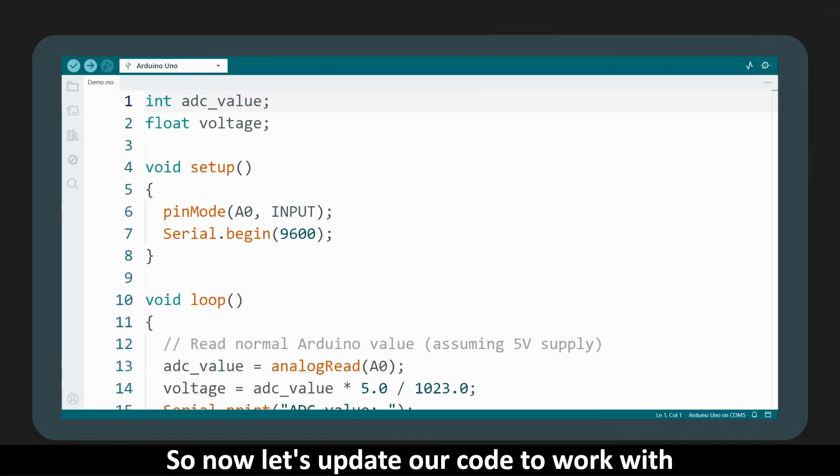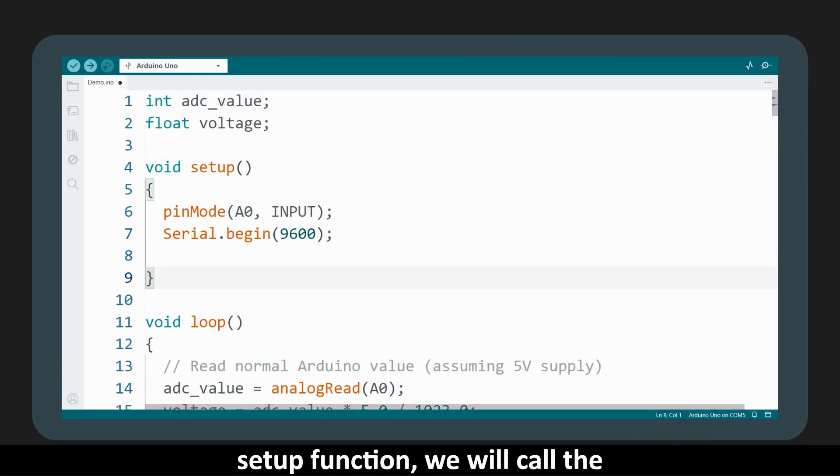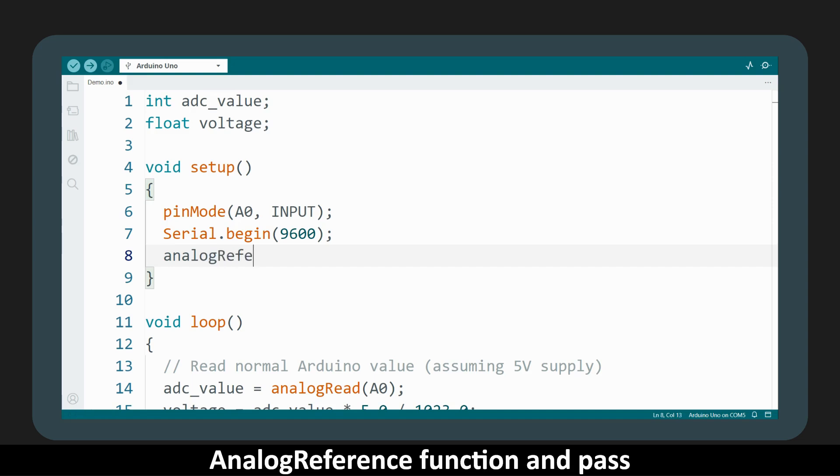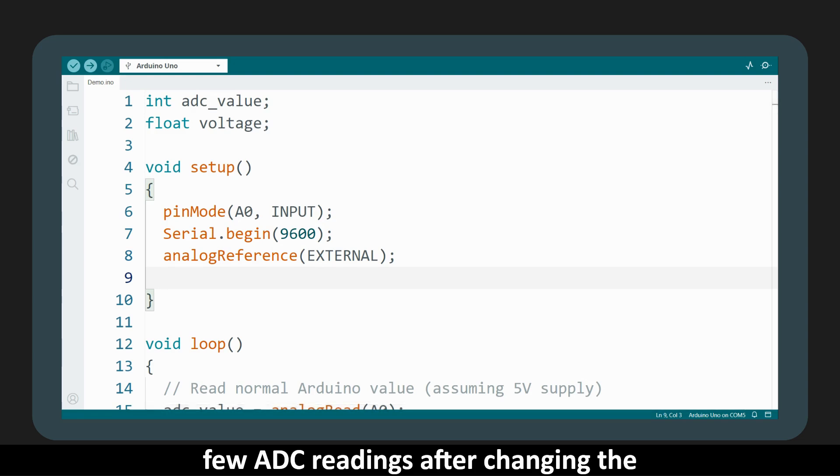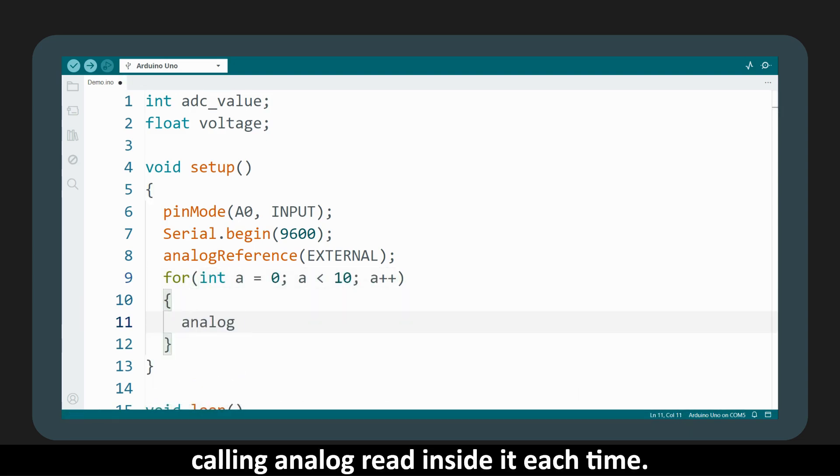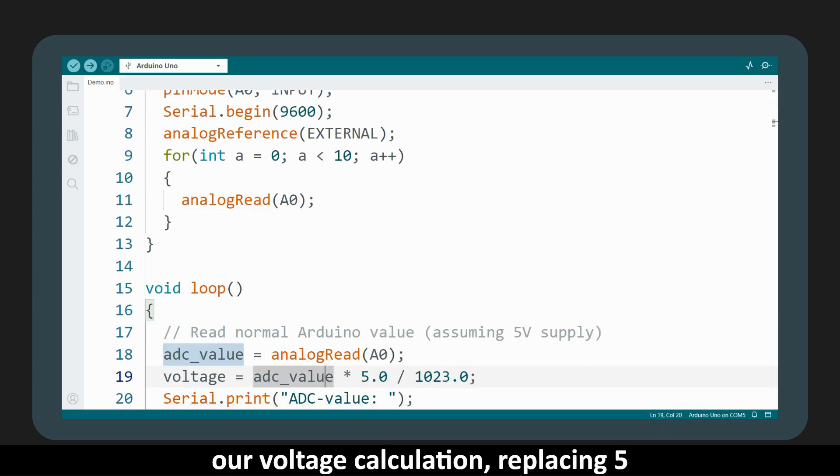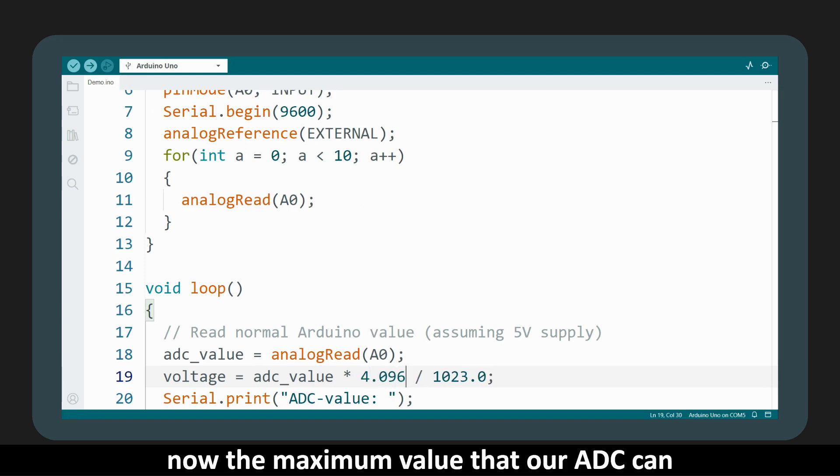So now let's update our code to work with an external voltage reference. In the setup function, we will call the analogReference function and pass external as the parameter, since we are using an external reference source. It is also good practice to discard the first few ADC readings after changing the reference, because they tend to be inaccurate. To handle this, we'll run a short for loop about 10 times, calling analogRead inside it each time. In the loop function, we will also update our voltage calculation, replacing 5 volts with 4.096 volts, as now the maximum value that our ADC can read is 4.096 volts.